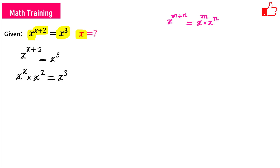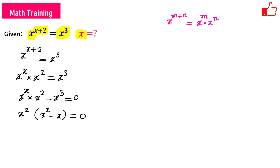Now let us take x cube to the left hand side. So this becomes x raised to the power x times x squared minus x cube, this is equals to 0. Now I can take x squared common. So this becomes x squared times x raised to the power x minus x, equals to 0. I can also take x outside, so this will be x raised to the power x minus 1 minus 1, equals to 0.